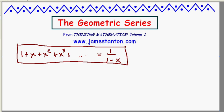Well, clearly there's something suspect about this formula. It can't always be true. For example, if I put in x equals 2, it's telling me that 1 plus 2 plus 4 plus 8 forever is 1 over 1 minus 2. 1 over negative 1 is negative 1. That's clearly not right.